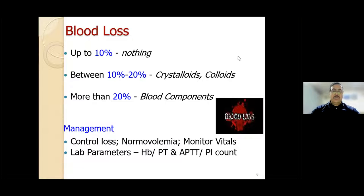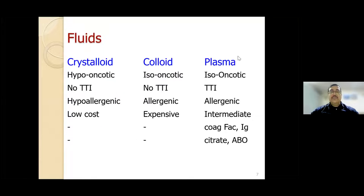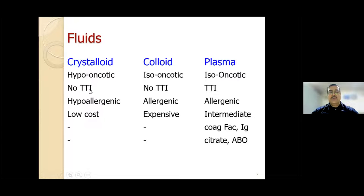There is a very important concept called patient blood management—management must be tailor-made for the particular patient and cannot be generalized for an entire category. There are three important fluids used for resuscitation: crystalloids, colloids, and plasma. Crystalloids are hypo-oncotic, meaning to replace one liter you must give three liters, while colloids and plasma are iso-oncotic—one liter replaces one liter. Crystalloids carry no transfusion-transmissible infection risk; neither do colloids, but plasma does have a TTI risk.